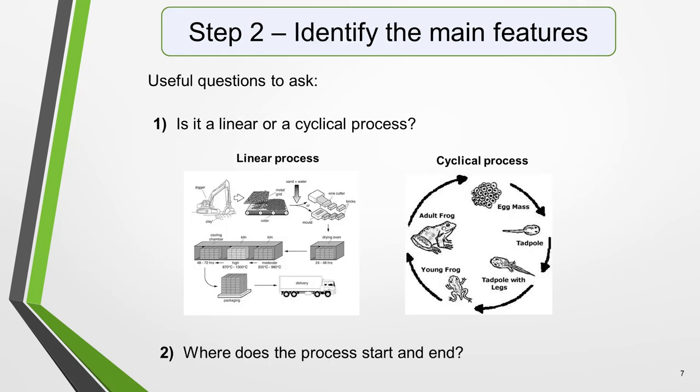The graphic in process diagram questions should not be difficult to understand. There are not usually any numbers to analyze, as in most other types of questions, just a diagram to interpret or two diagrams which each show part of the process. All you're looking for are the main features. These should be the easiest thing to spot. There will be lots of information in the graphic to help you identify them, especially titles, labels, and captions.